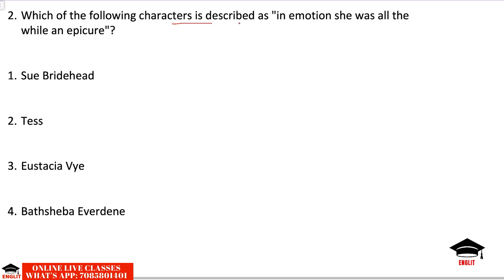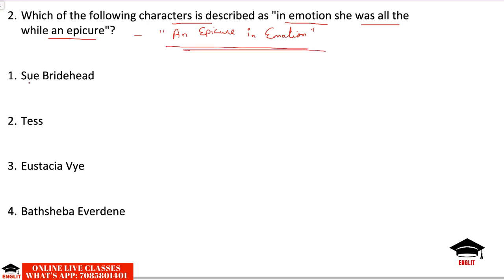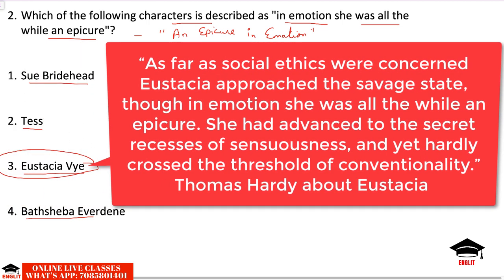Next question: which character is described as 'in emotion, she was all the while an epicure'? The options are Sue Bridehead, Tess, Eustacia Vye, or Bathsheba Everdeen. The correct answer is Eustacia Vye. Hardy describes her: 'as far as social ethics were concerned, Eustacia approached the savage state, though in emotion she was all the while an epicure. She had advanced to the secret recesses of sensuousness yet had hardly crossed the threshold of conventionality.'